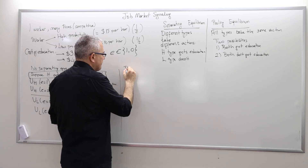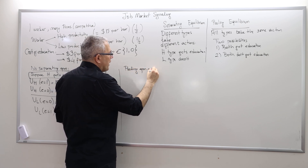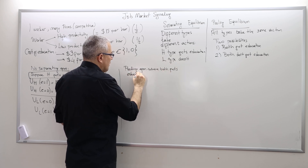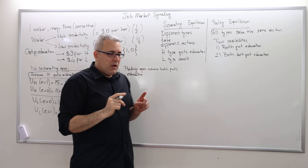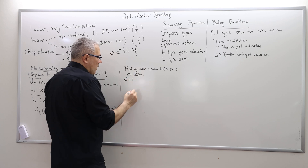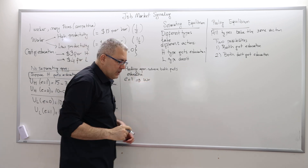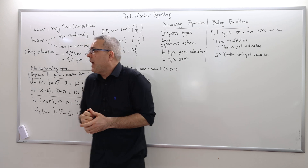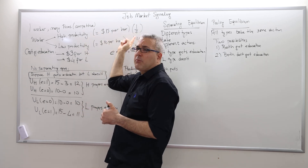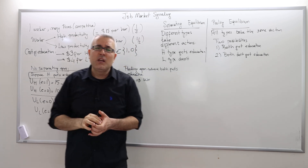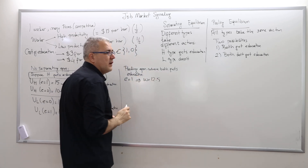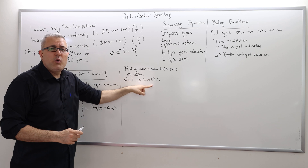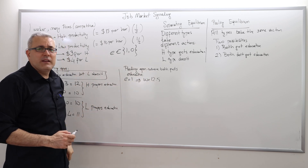Now the pooling equilibrium where both get education. When E equals 1, firms don't know if it's the high or low type — they believe it's each with half probability. So in expectation, the productivity of the worker is one-half times 15 plus one-half times 10, which is $12.5. Therefore, the wage is $12.5 whenever they observe that the worker got education.